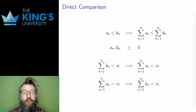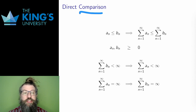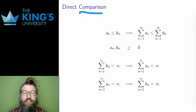I want to start with comparison. I already know some series converge. In particular, I know geometric series converge when the common ratio has absolute value less than 1, and zeta series converge when the exponent p is larger than 1. These are the two most useful series to compare with. For some new series,